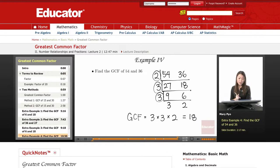The GCF, the greatest common factor between 54 and 36, is 18. That was a lesson on greatest common factor. Thank you for watching Educator.com.